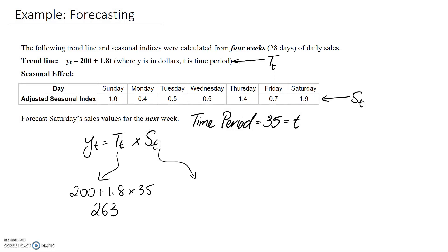We then need to figure out the seasonal component. Since we're interested in Saturday, the seasonal component is 1.9.